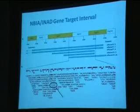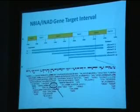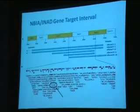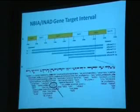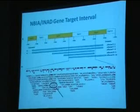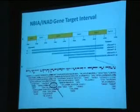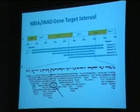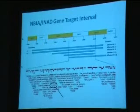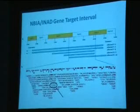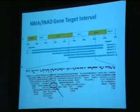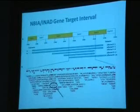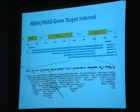We contacted Professor Susan Hayflick in the United States, who had described the identification of the PANK2 gene, and asked whether she had additional families. Coincidentally, she had been working in the same area with families diagnosed with infantile neuroaxonal dystrophy, and when we reviewed the diagnosis it seemed the phenotype of her families and ours was very similar. Although we combined data on five families, we were still left with a very large region. So we split the region in half — Susan's group sequenced genes in one half and we sequenced genes in the other half.